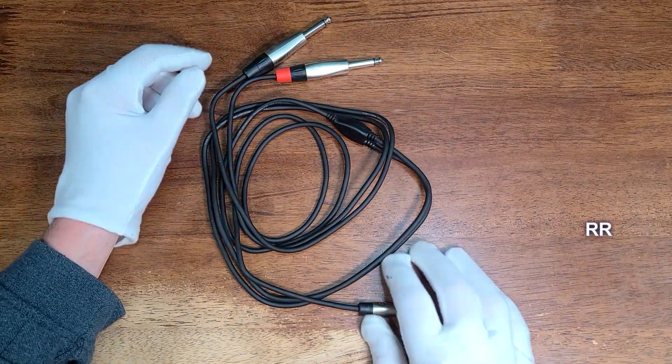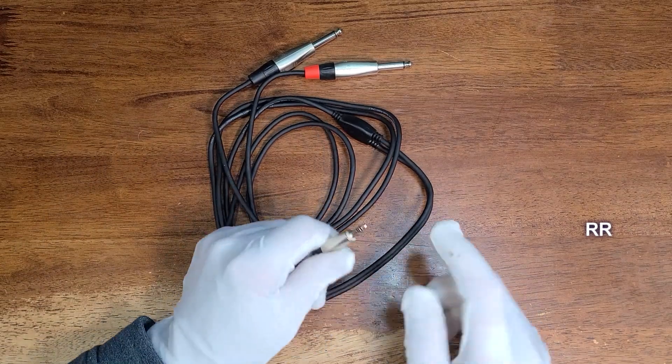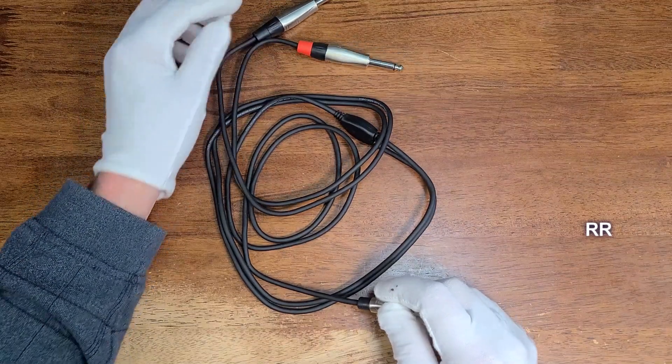This is the HOSA stereo breakout cable. I got the six foot version of this. Basically it's a 3.5 millimeter on this end and it goes to dual quarter inch jacks on this end.